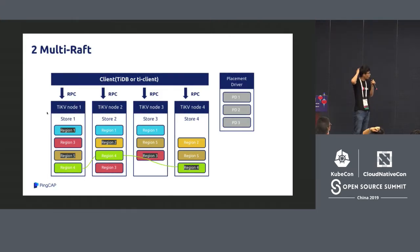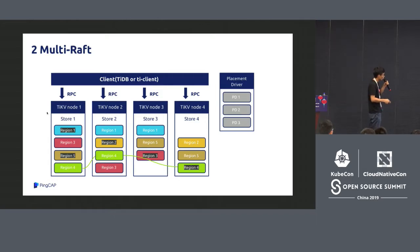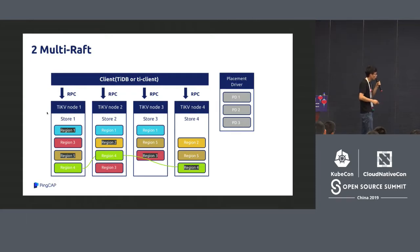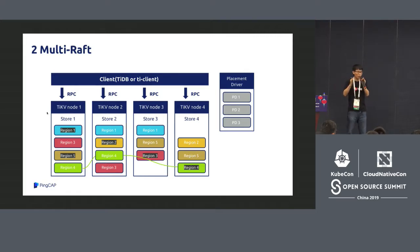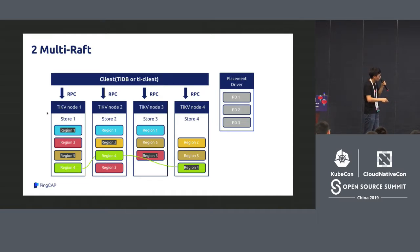For multi-raft: with only a single Raft group, all data copies can only be stored on a single device, which cannot be extended. With multi-raft, we cut the data into different ranges, and each range is a Raft group. Data consistency is maintained within each raft group. The leader of each Raft group is indicated on the architecture diagram.